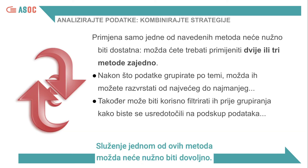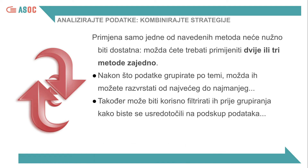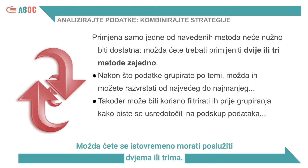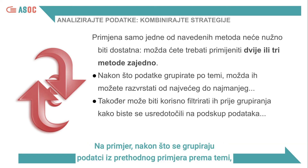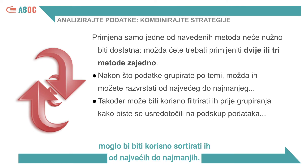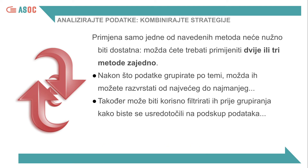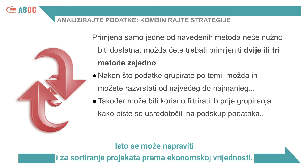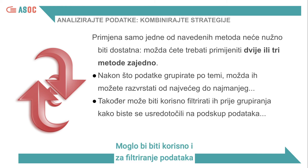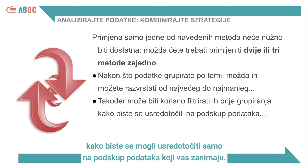Using one of these methods will not necessarily be sufficient. You may need to use two or three together. For example, having grouped the data by theme, it might be useful to sort them from the largest to the smallest. This will help you quickly understand which theme has the largest number of projects. The same could be done to sort projects by economic value. It could also be helpful to filter the data before grouping them so you can focus only on a subset that interests you.